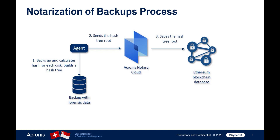To verify authenticity, the agent calculates the hash of the disk and compares the hash stored in the hash tree inside the backup. Further, to ensure the hash tree was not compromised, the agent sends the hash tree root to the notary service. Then the service compares it with the one stored in the blockchain database. If the hashes match, then it is authentic. If not, the software will display a message stating the disk is not authentic.